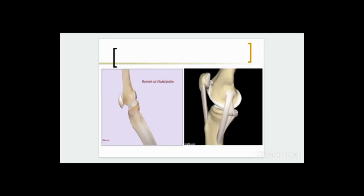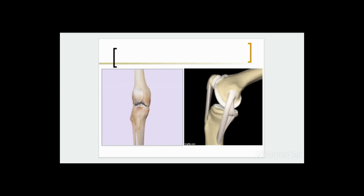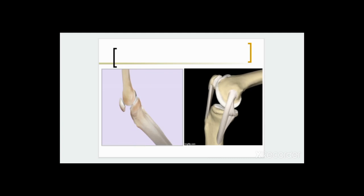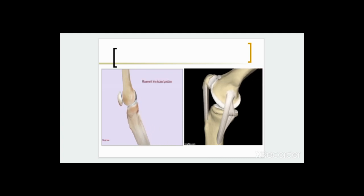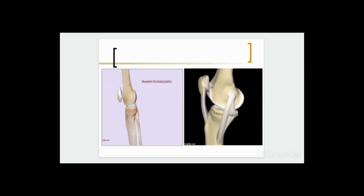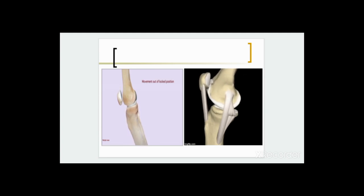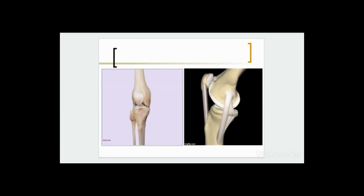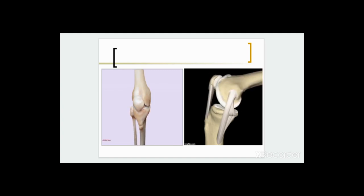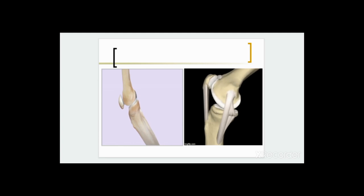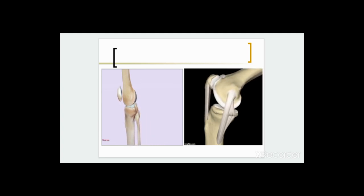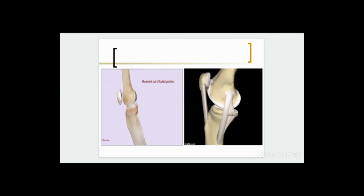The first picture shows the non-weight-bearing position. On the left side, you can clearly see the tibial condyle moving on the fixed femoral condyle. In the second picture on the right side, the femoral condyle moves on the fixed tibial condyle. This is the weight-bearing position.